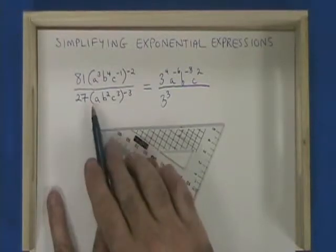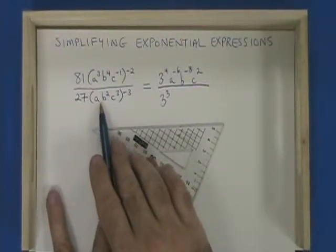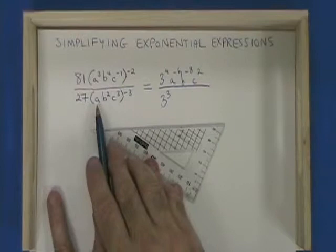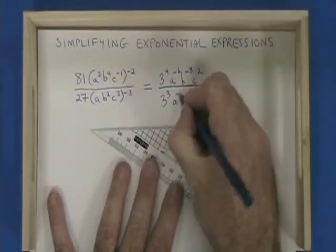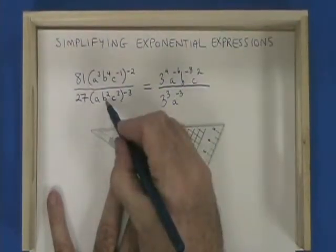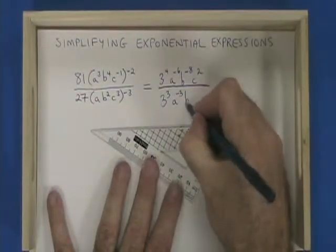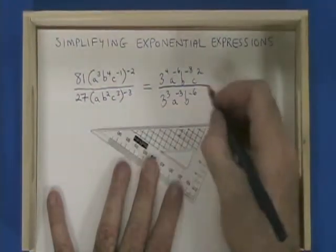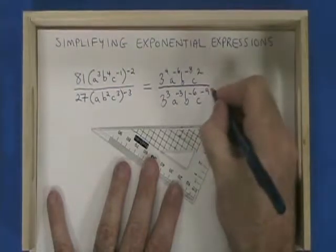This negative 3 will now be computed across the contents of the bracket. a to the 1, to the power of negative 3, is a to the negative 3. b to the 2, to the negative 3, is b to the negative 6. c to the 3, to the negative 3, is c to the negative 9.